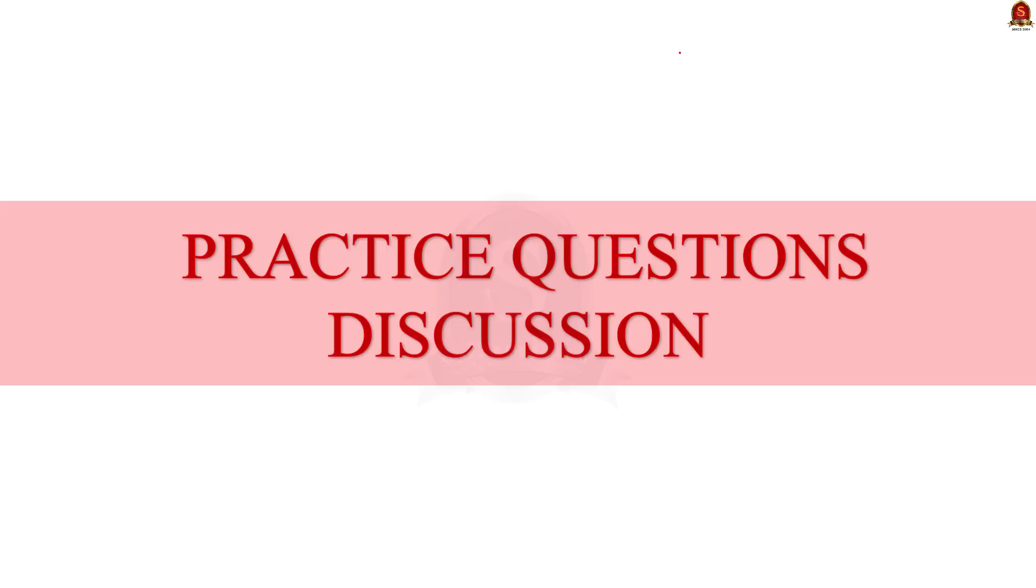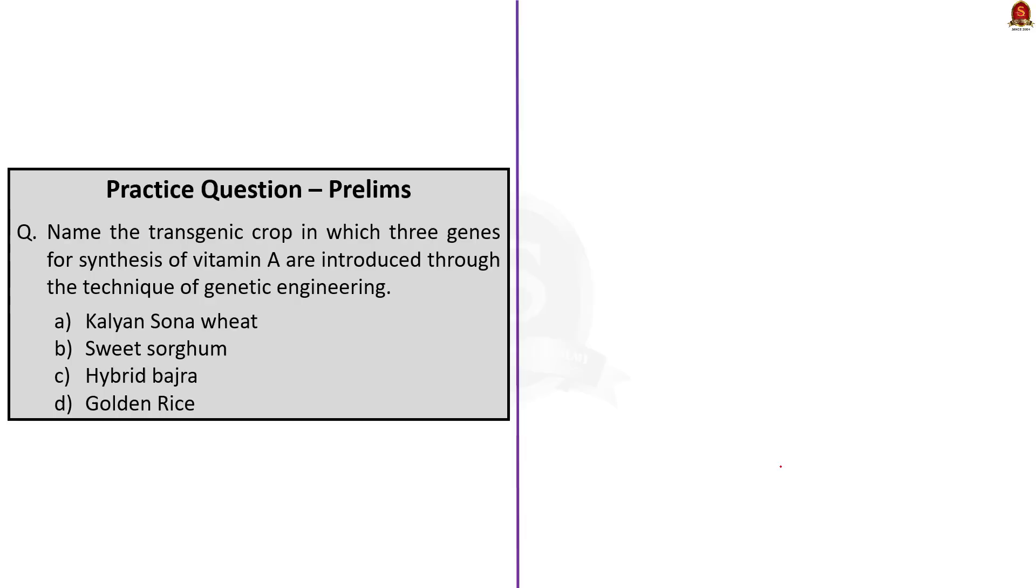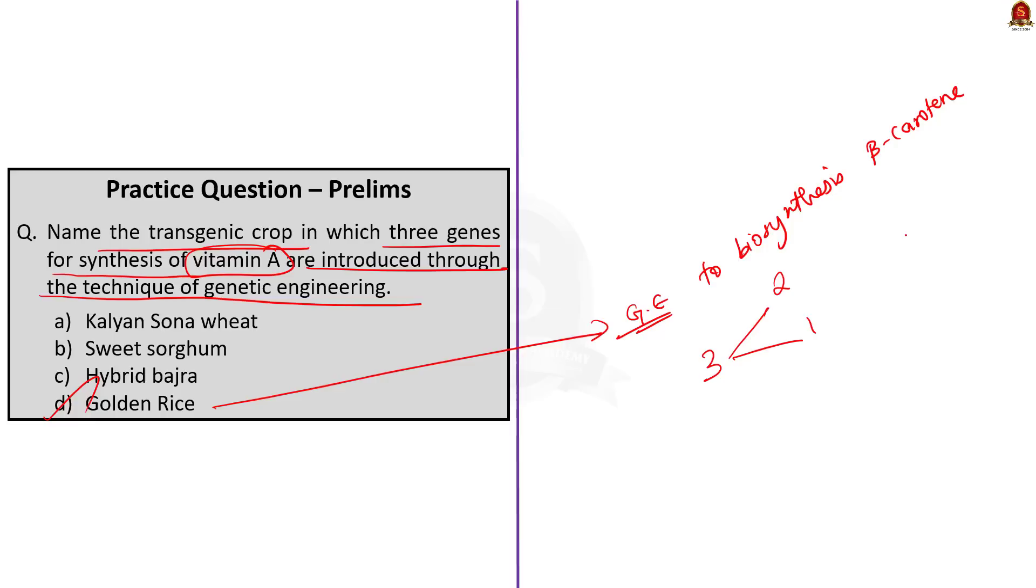Today, we have four questions. Three questions will be discussed by me and one question will be the quiz question for today. Question number one. Name the transgenic crop in which three genes for synthesis of vitamin A are introduced through the technique of genetic engineering. Here, the correct answer is option D. See, golden rice is a variety of rice produced through genetic engineering to biosynthesize beta carotene. This beta carotene is a precursor of vitamin A. So, through genetic engineering, it will become the edible part of rice. Golden rice is different from its parental strain due to the addition of three beta carotene biosynthesis genes to the golden rice. These included two genes from the daffodil plant and a third from a bacterium. Researchers used a plant microbe to ferry in the genes into the plant cell.